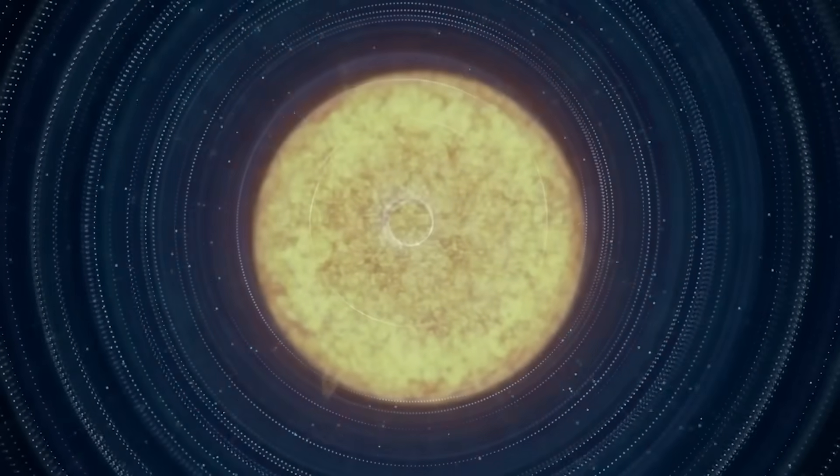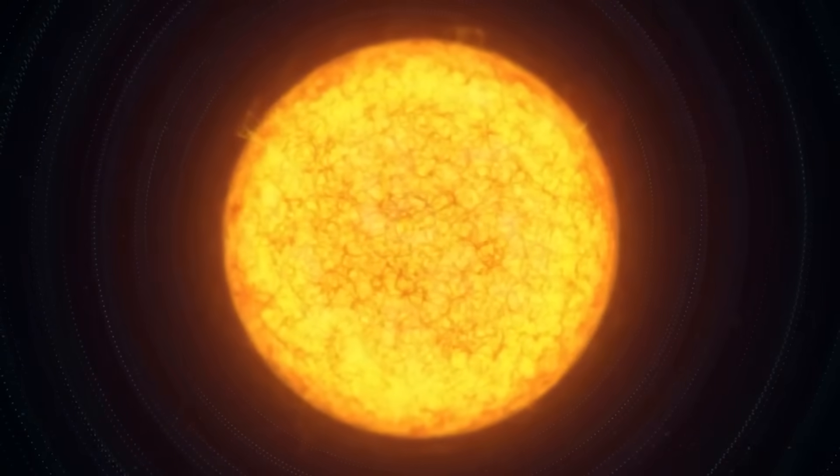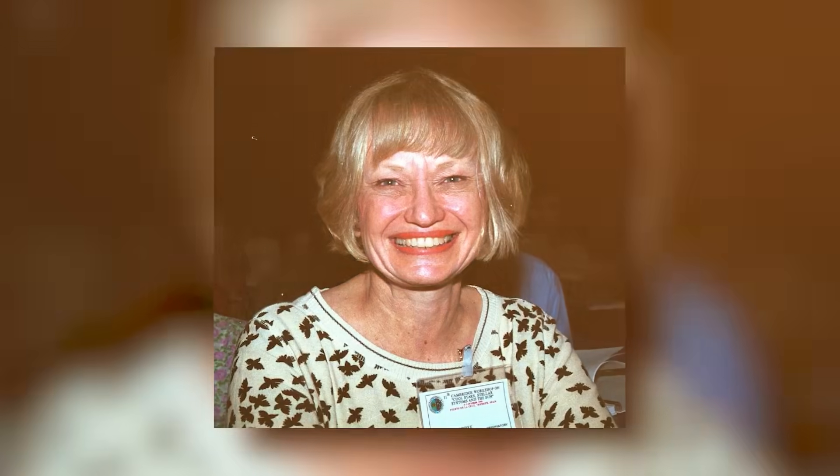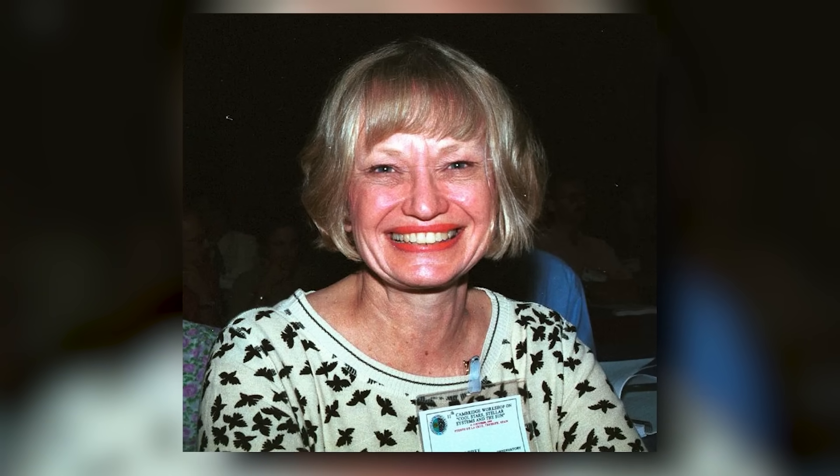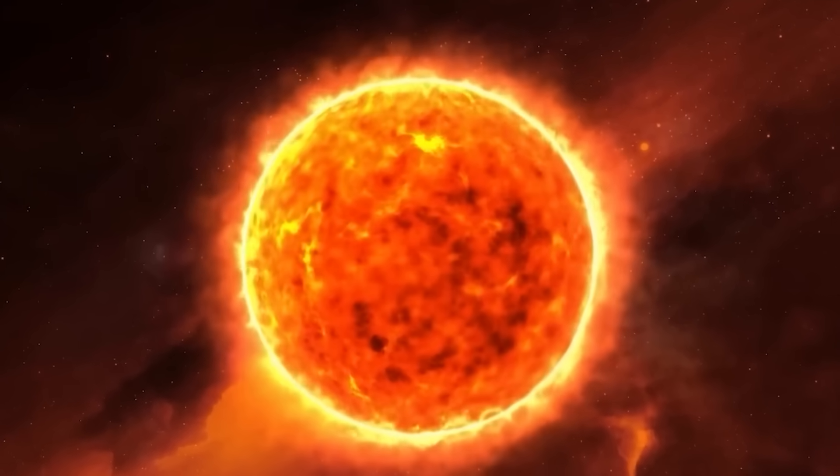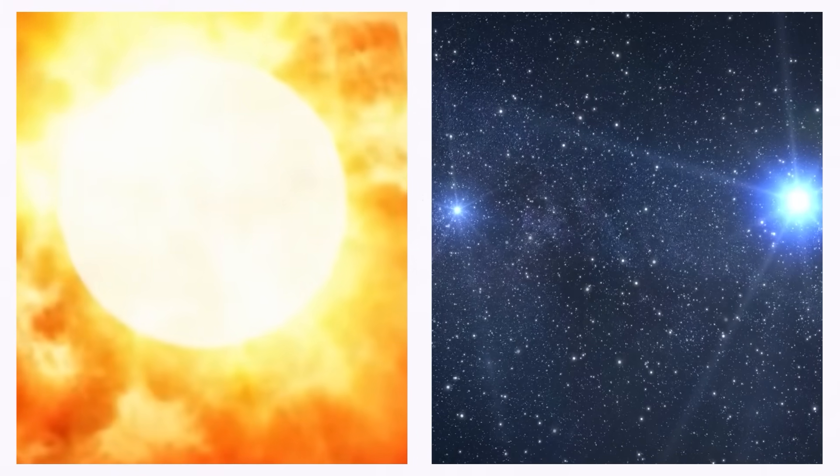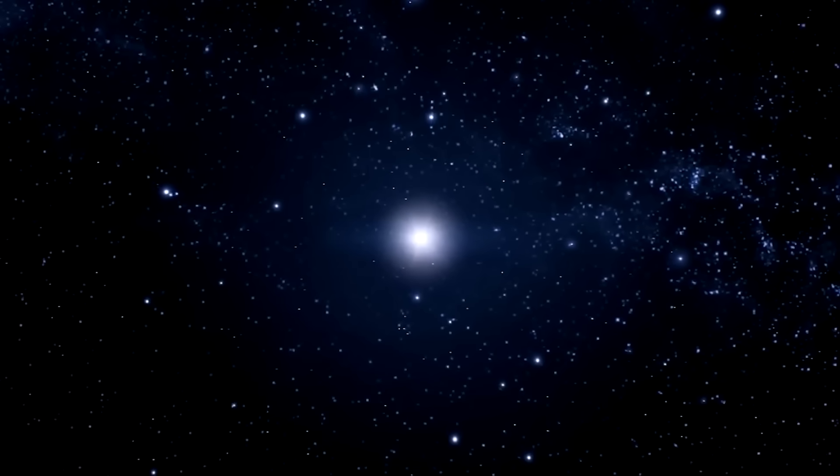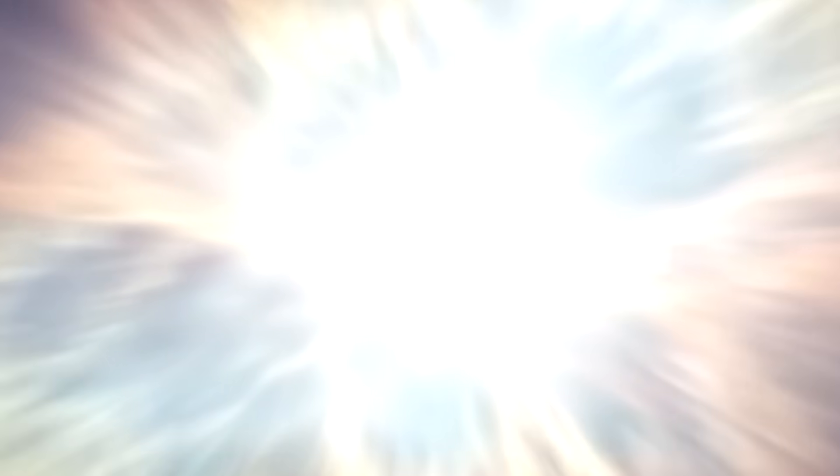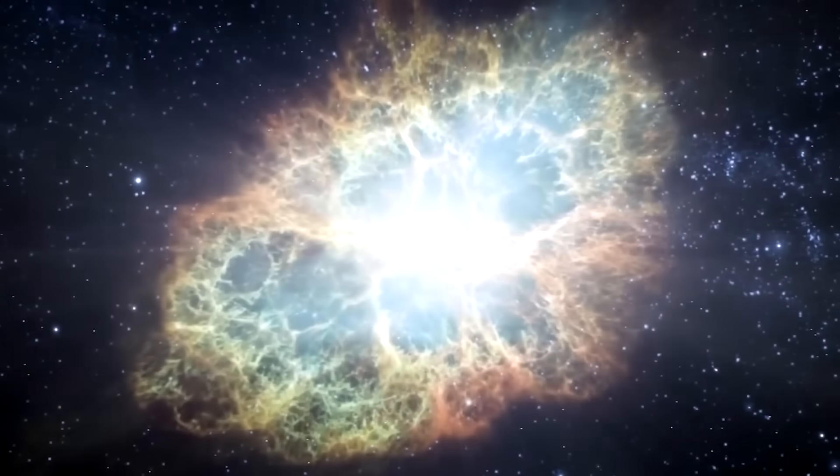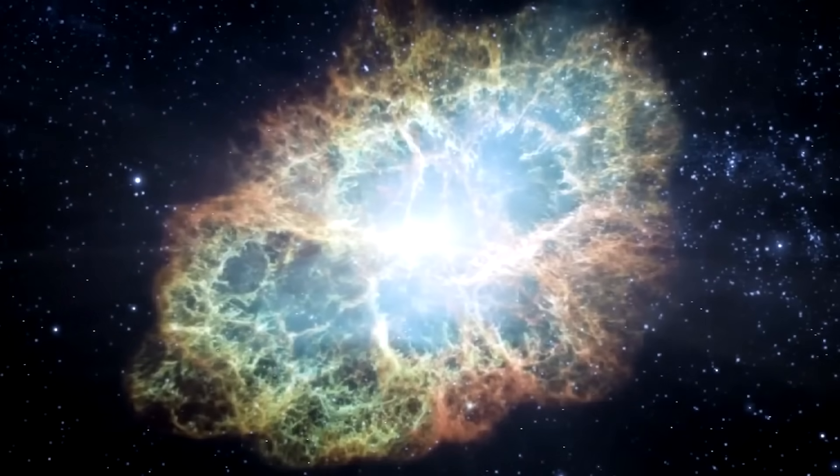Betelgeuse got brighter again after the Great Dimming and turned into something even more striking. Astrophysicist Andrea Dupree at the Harvard-Smithsonian Center for Astrophysics says that the star is now 150% brighter than normal. This makes it the seventh brightest star in the sky right now. Scientists were scared when they saw a red glow in the sky's southern hemisphere today. Still, it gets more interesting because this has led to a lot of different ideas about what caused the Great Dimming.